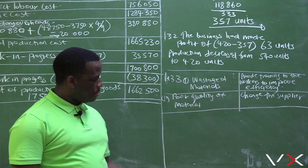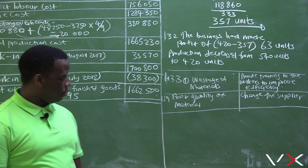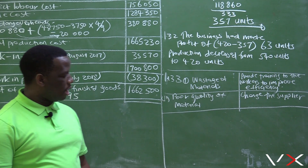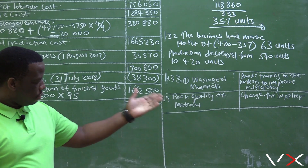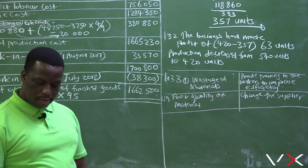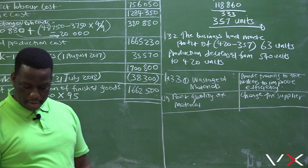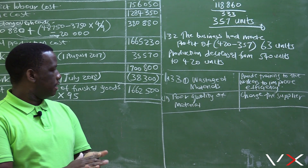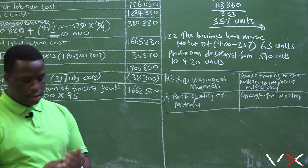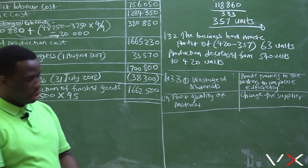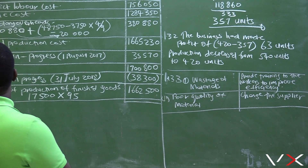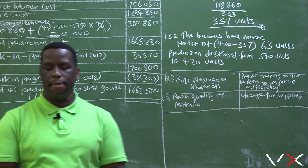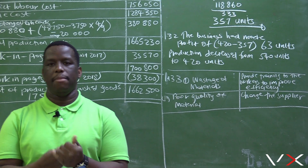They only require two reasons, so those are the two main ones, though there may be others such as theft requiring a regular physical count. This brings us to the end of question one, taken from the November 2018 exam. Thank you very much.